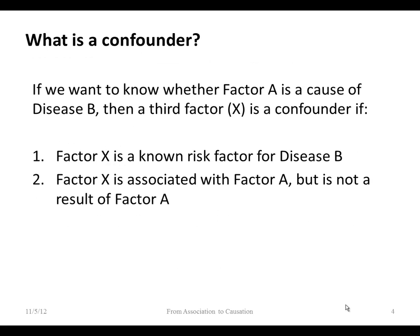There's a precise definition of a confounder — you can review this in Gordas if you need to. If you're trying to figure out whether factor A is a cause of disease B, then a third factor X is a confounder if two things are true: factor X has to be a known risk factor for disease B, and it has to be associated with factor A but not a result of factor A — so it isn't on the causal pathway from A to B.